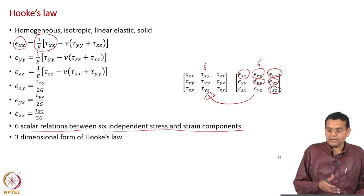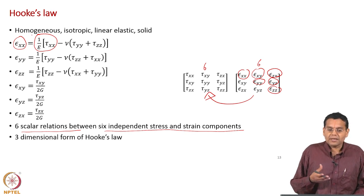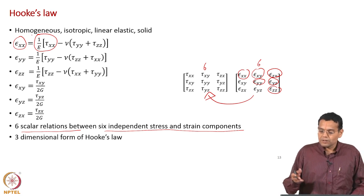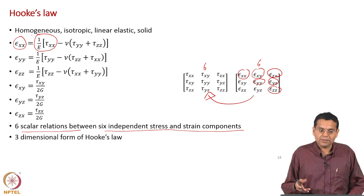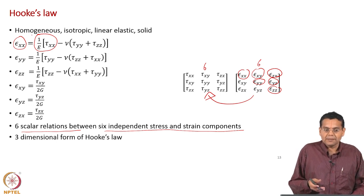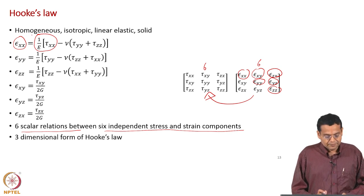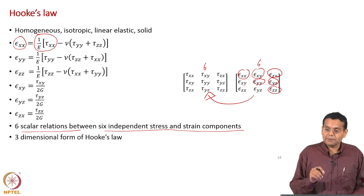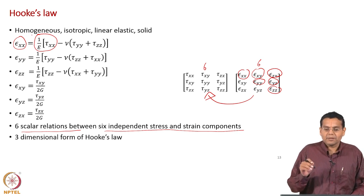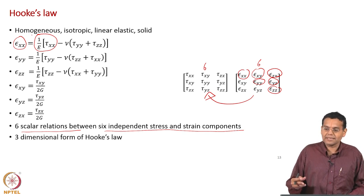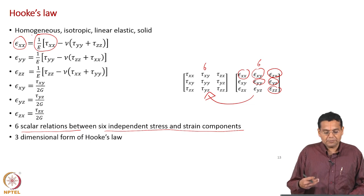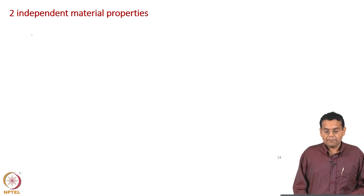The Hooke's law here is written for epsilon_xy, not gamma_xy, because epsilon_xy is the component of the strain tensor. We write epsilon_xy = tau_xy / (2G), not gamma_xy = tau_xy / G, because we are expressing strain tensor components in terms of stress tensor components. The original experimentation relates tau_xy and gamma_xy since the change in angle is what is measured directly.